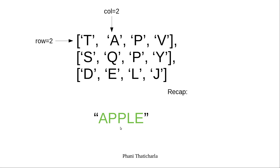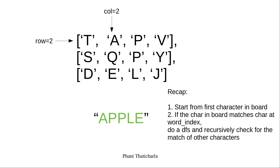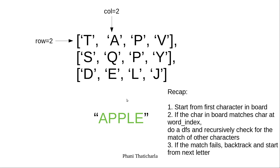Let's do a recap of what we have done. We start with the first character in the board and compare it with the character in the word. If there is a match, then we do a DFS and recursively check for match for the other characters. If the match fails, then we backtrack and start from the next letter. Now with this understanding, let us write the code.